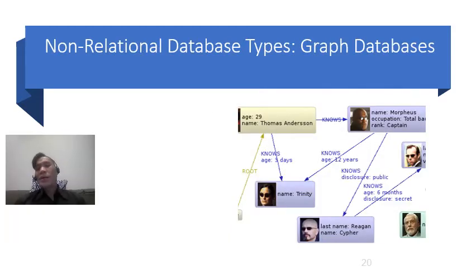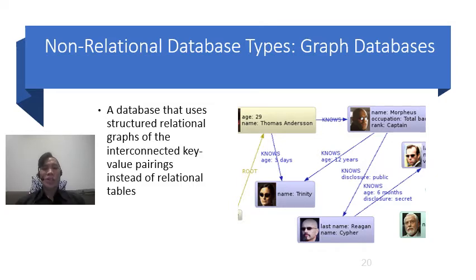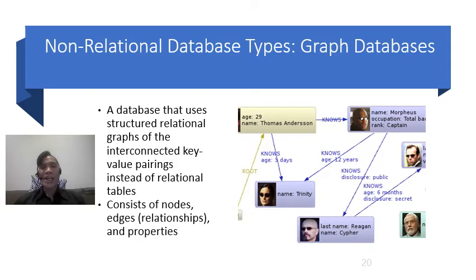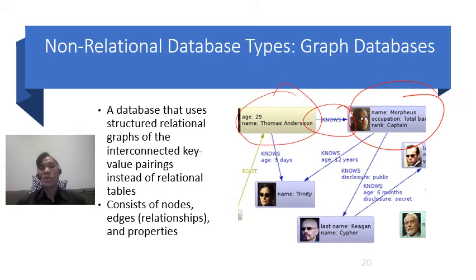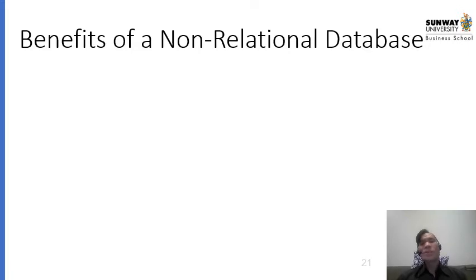A more sophisticated type of non-relational database is what we call the graph database. Graph databases use a structurally relational graph of interconnectivity of key-value pairings instead of relational tables. This consists of nodes, edges, relationships, and properties. For example, you can see the relationship between one main value and another main value, and therefore you also get to see the relationship between those two documents or interconnected pairs.